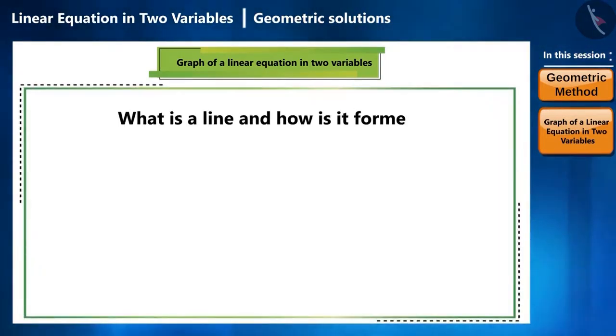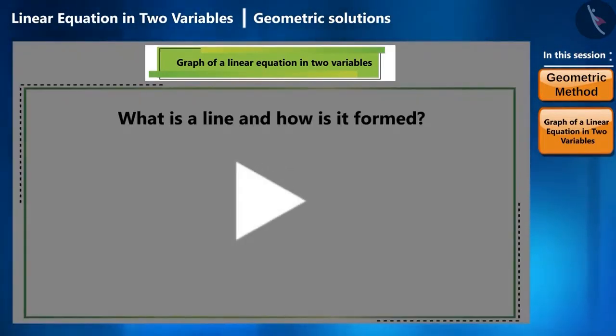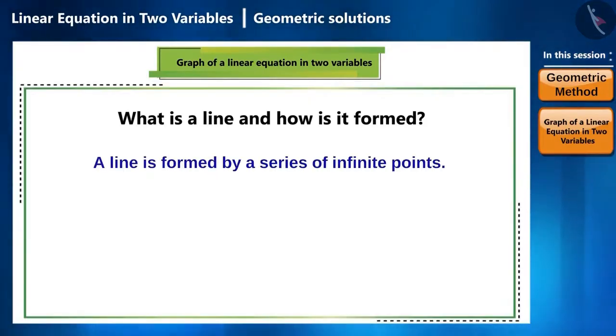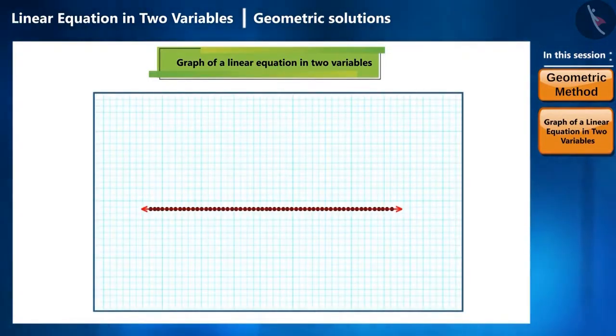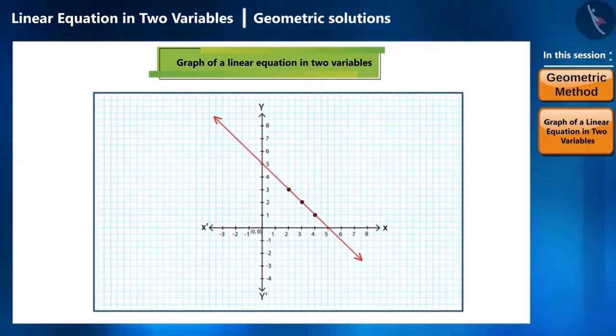Friends, can you tell me what is a line? Or, what is a line made of? Or, how it is made? Think about it for some time. Can we say a line is formed by a series of infinite points? Yes. That means, if a line is a set of infinite points, that is, if we consider the graph, then every point in it will be the coordinate point of the x and y axis.